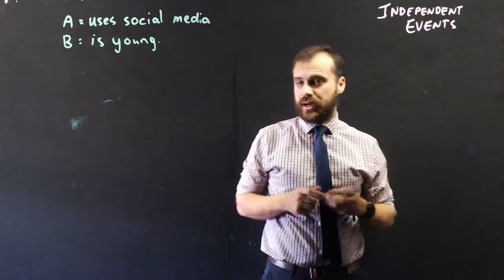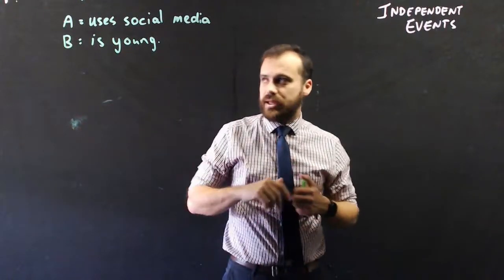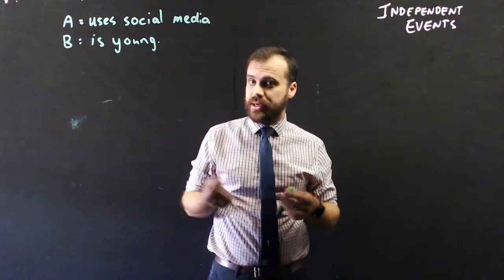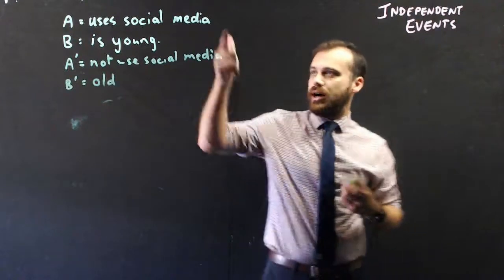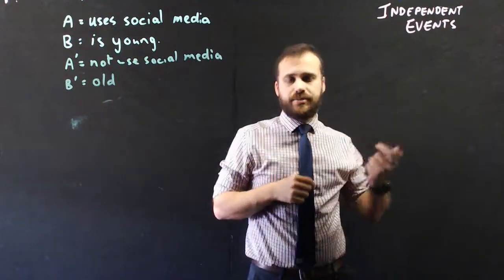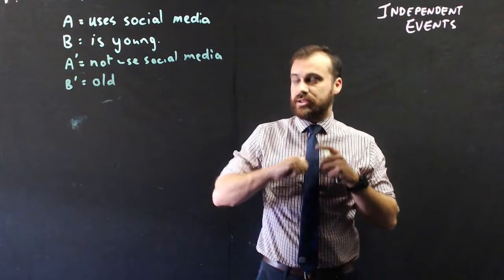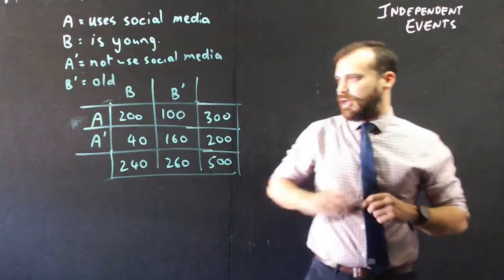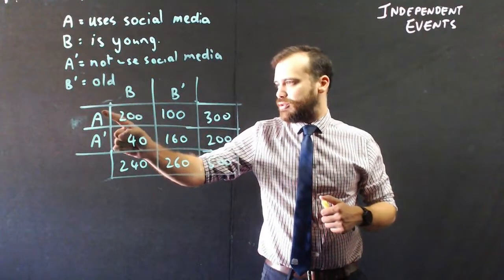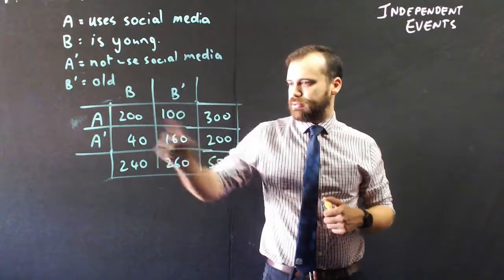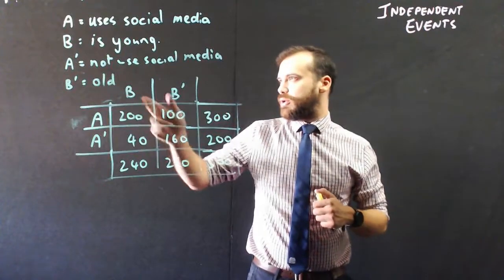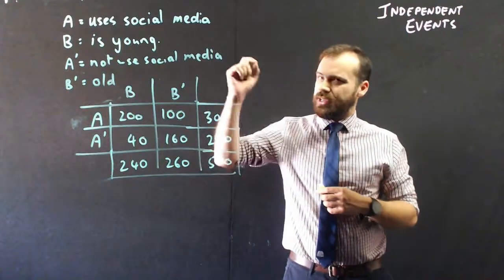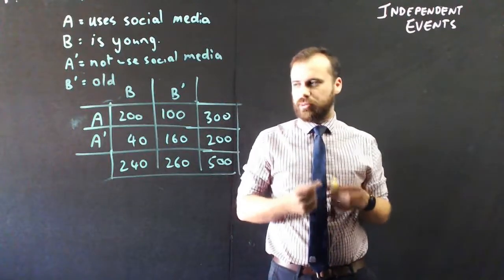So let's consider these two sets: people who use social media, and people that are young — say, under 25 or whatever. So A-dash is 'does not use social media' and B-dash is 'old.' The question is, are these two events — uses social media and is young — independent events? Are you more likely or less likely to use social media if you're young? Here's a survey: 200 out of 500 people surveyed were young and used social media, and 40 people were young and didn't use social media, and so on and so forth. The key is to use conditional probability to find out the answer.